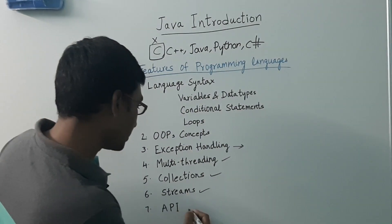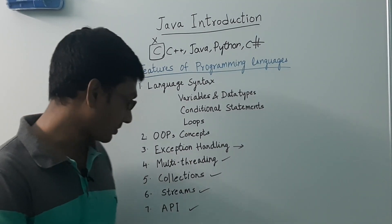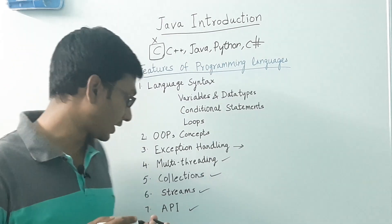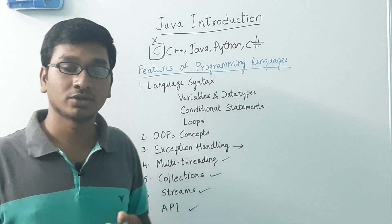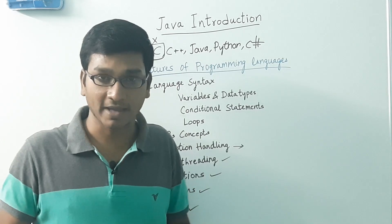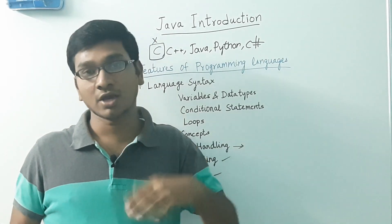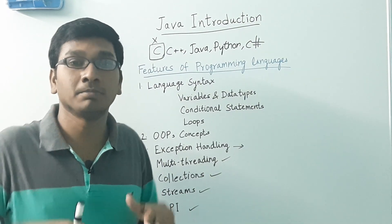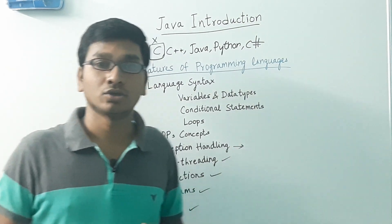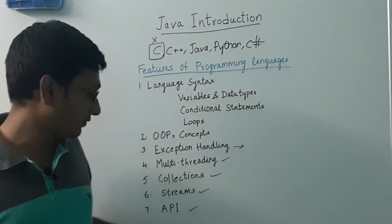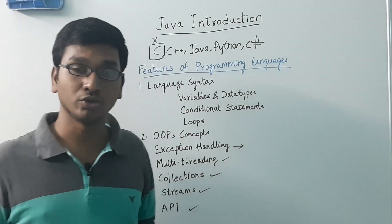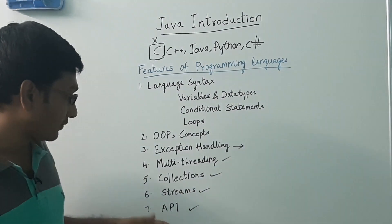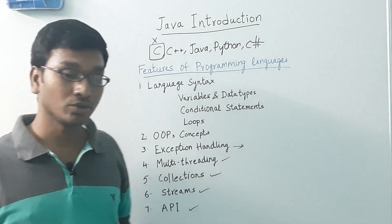The last thing is API — application programming interface. We have a set of libraries under it. Each language has its own libraries. Libraries have packages, and each package has multiple classes, and each class has its own prebuilt functionality. What you need to know for the API is which class to use and when to use it — for what functionality you want to use it for.